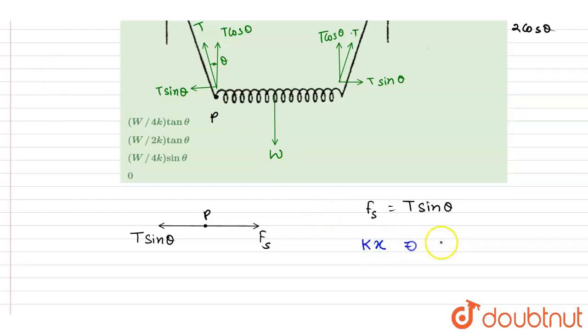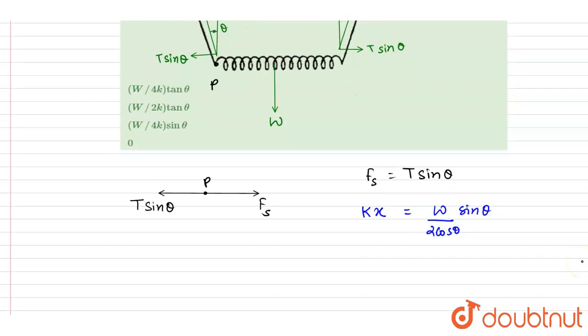...where x is the extension in the spring and T is W by 2 cos theta into sine theta, right? So you can see here you got the x, it is W by 2k tan theta.